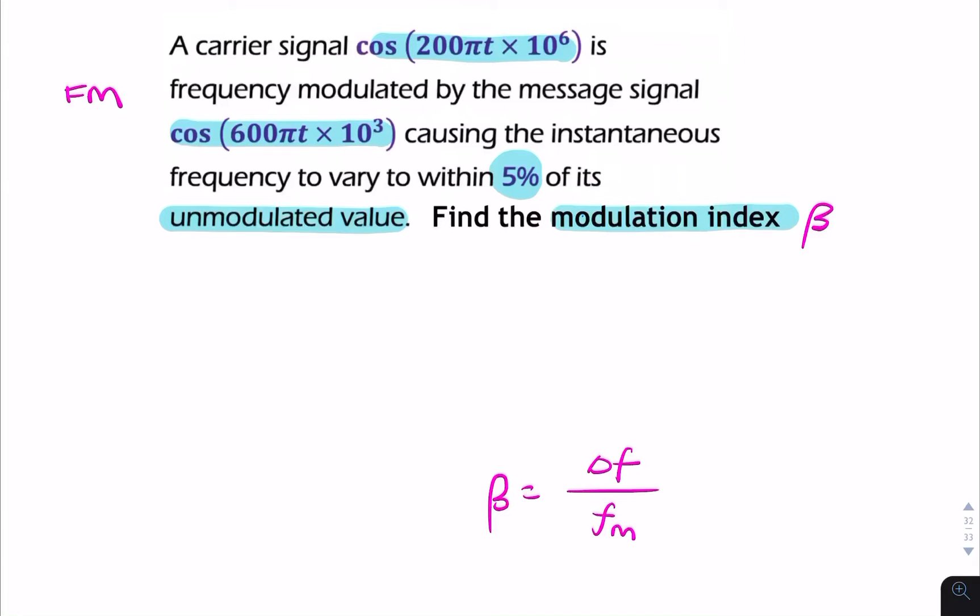So looking in the question, we're given three bits of information. We're given the carrier signal, so that frequency is omega C, 200π times 10 to the power 6. We're also given the message frequency, so that's omega M, is 600π times 10 to the power 3.